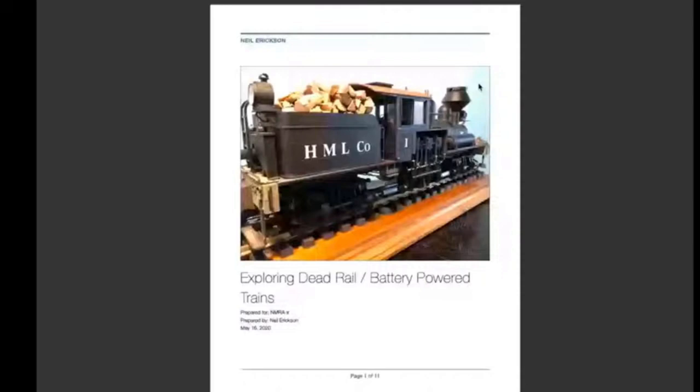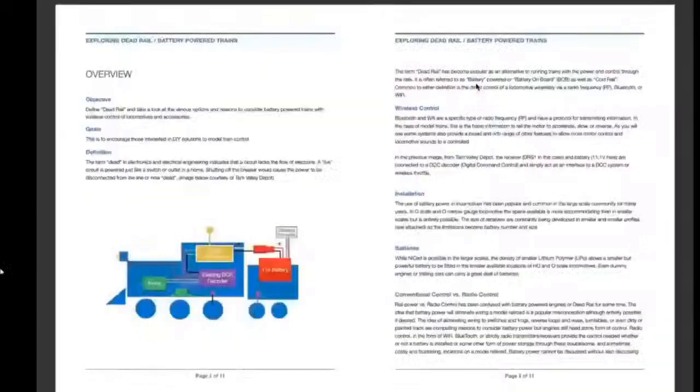This got me started in dead rail. This runs in the garden. It is flawless, runs all the time. And of course, it doesn't receive any power from the rails. It's all from the batteries. Basically, the interest in dead rail seems to be growing. Dead rail, I think, if you look at my little definition there, is a battery-powered locomotive with wireless control.